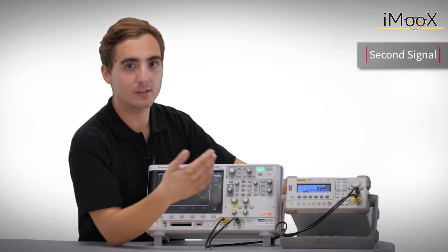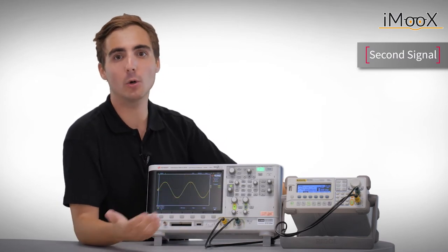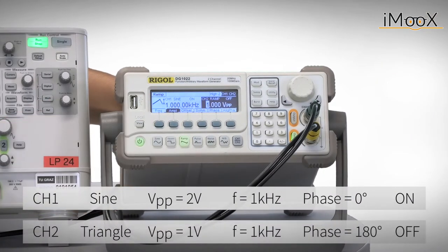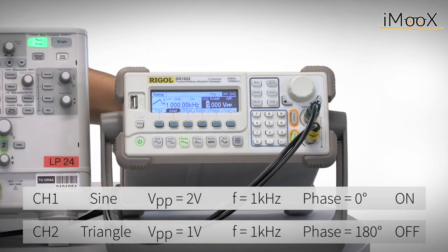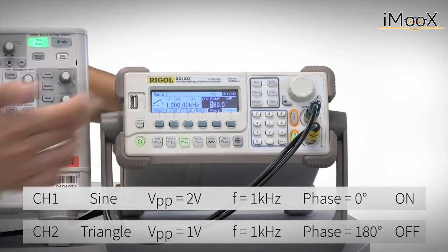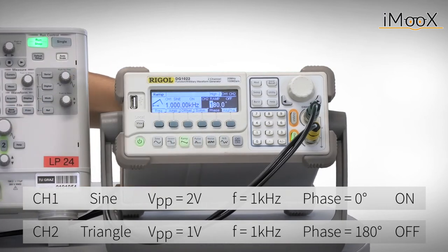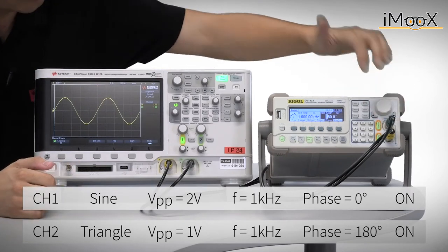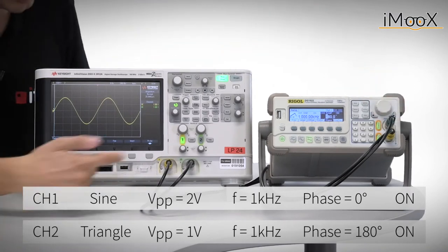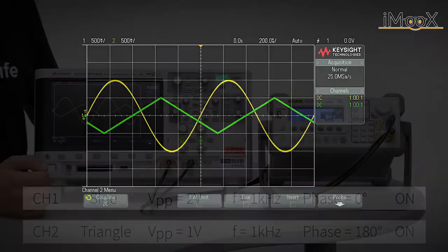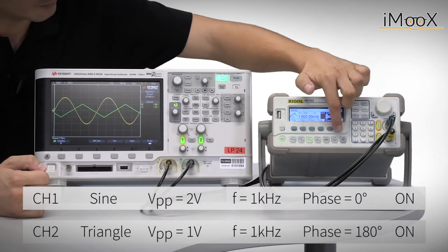As our scope has 2 analog channels, we would also like to use the second one. Therefore, we set up a triangular signal with a peak to peak voltage of 1 volt, the same frequency, and a phase shift of 180 degrees. Now again, enabling the signal generator output and also channel 2 on our scope, we see both signals. And in order to make the signal phases fit our settings, the phases have to be aligned too.